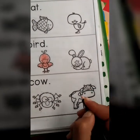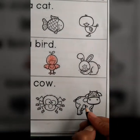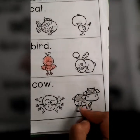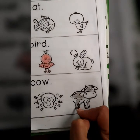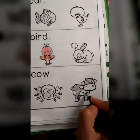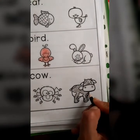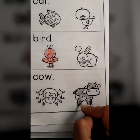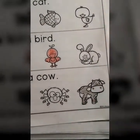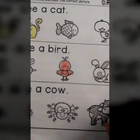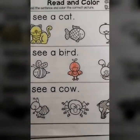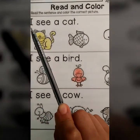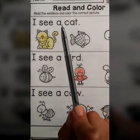I'm going to color the cow this way. Now, let's repeat reading these sentences: I see a cat.